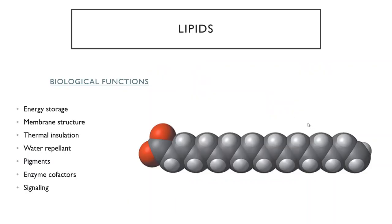Lipids have a lot of different functions. Probably the two most important or best known are energy storage and as the structure of the membrane. The cell itself is made of a lipid bilayer — two layers of lipids that form a membrane — and that is what keeps the inside of the cell separate from the outside.